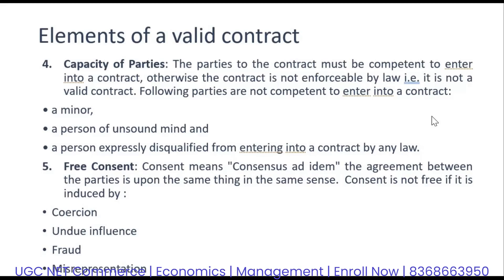Then there is undue influence — that is again a kind of forcing yourself on someone to enter into a contract. Third, one can indulge in fraud. Fourth is misrepresentation — for example, telling the other party that you are the owner of the house whereas you are not, misrepresenting yourself just to get the other party into an agreement. Any of these four points make the consent not free and the contract invalid.